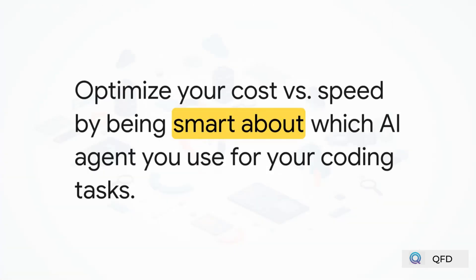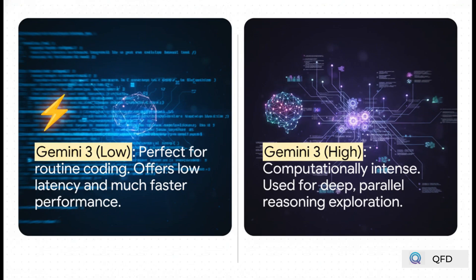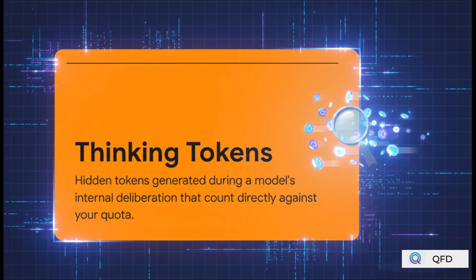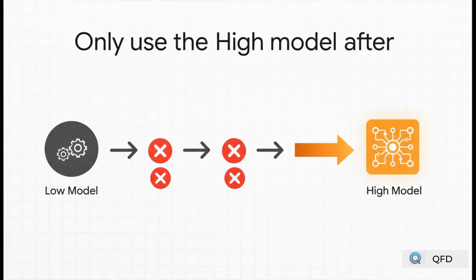Strategy one is all about choosing the right AI agent to save that precious quota. The easiest thing you can do is just move most of your day-to-day work over to Gemini Low. The high model uses thinking tokens that really chew through your limit during deep thinking. Here's a pro tip: only bring out the high model after the low model has failed a task, say, three times.